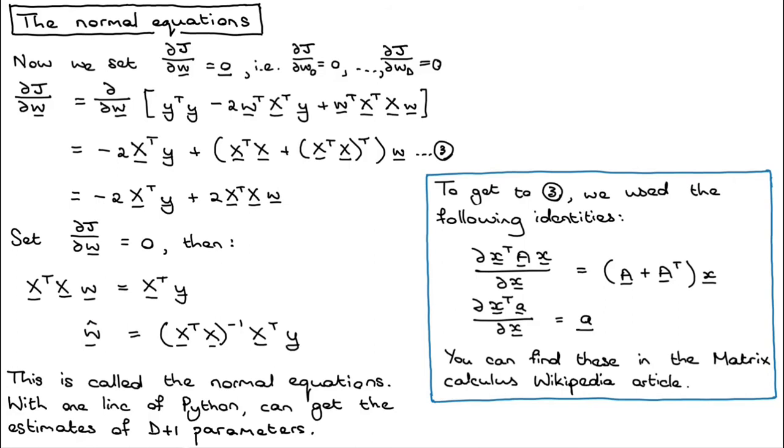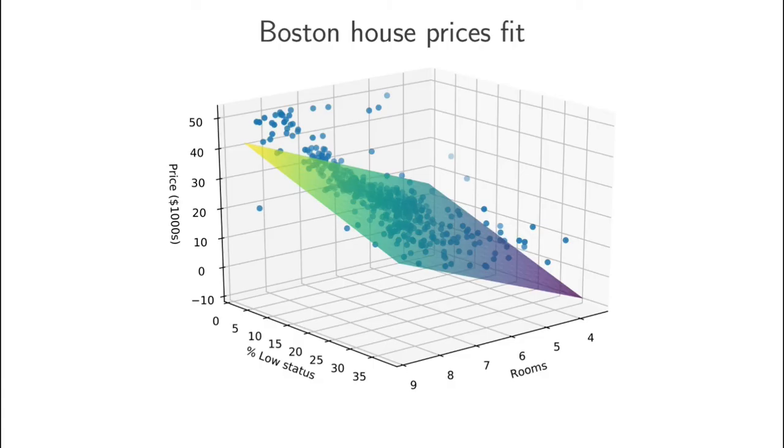So let's see what happens when we take this approach. I've implemented this one line of Python on the Boston data set that we looked at in the start. This is actually the fit, that surface, to the 506 neighborhoods in the subset of the Boston data set that we're looking at.